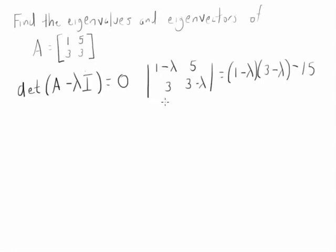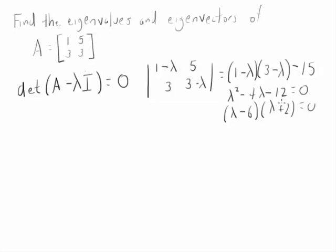If we do some work with this, multiplying it out, what we will get is lambda squared minus 4 lambda minus 12 equals 0, which factors as lambda minus 6 times lambda plus 2 equals 0. Our eigenvalues are lambda equals negative 2 and positive 6.